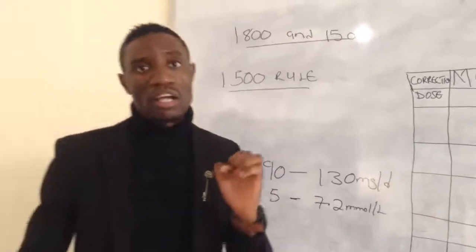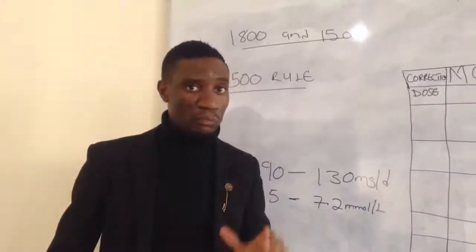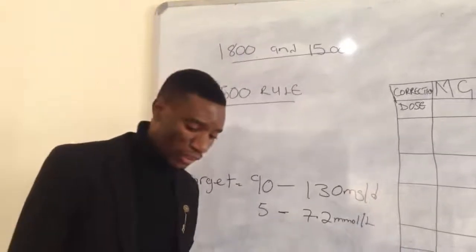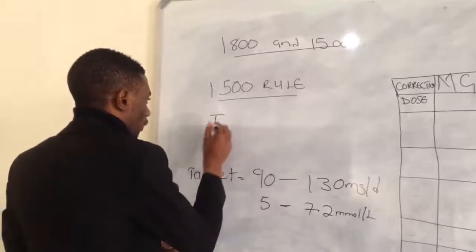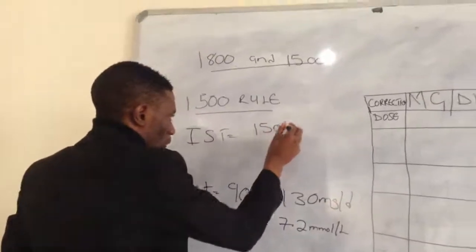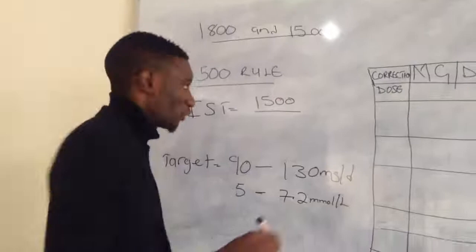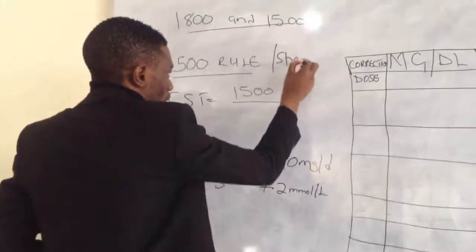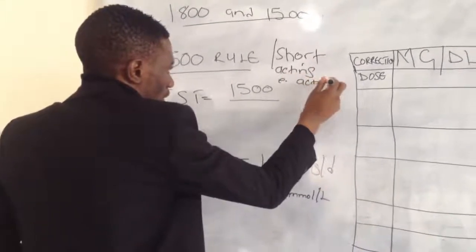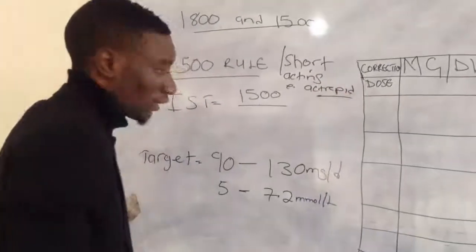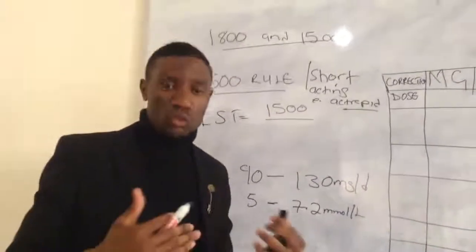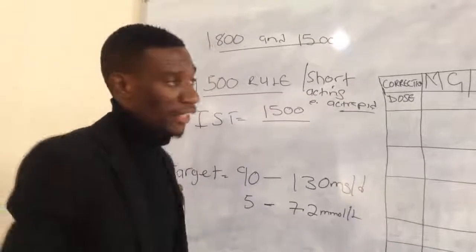Examples of short-acting insulin include Actrapid. I will use the short-acting insulin and the 1500 rule because these insulins are the most commonly available in our country and in Africa. To calculate the insulin sensitivity factor, you divide 1500 by the patient's total daily insulin requirement.